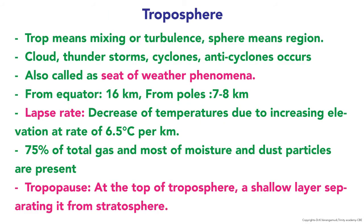The troposphere — 'trop' means mixing or turbulence, 'sphere' means region. Clouds, thunderstorms, cyclones, and anticyclones occur in this layer. It is also called the seat of weather phenomena. From the equator it is located at 16 kilometers, and from the poles about 7 to 8 kilometers. The lapse rate — decrease in temperature with increasing elevation — is 6.5 degrees Celsius per kilometer. Seventy-five percent of total gases and most moisture and dust particles are present in the troposphere. At the top of the troposphere, a shallow layer separating it from the stratosphere is called the tropopause.